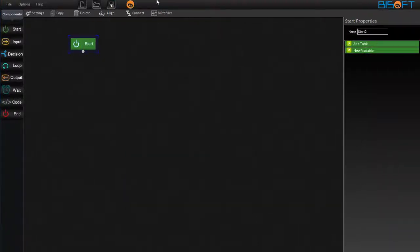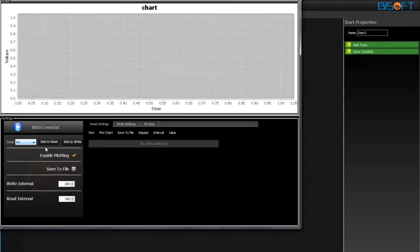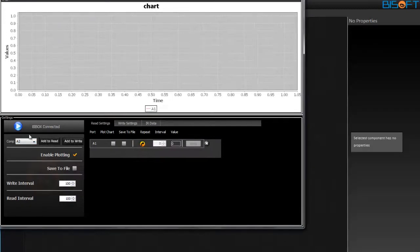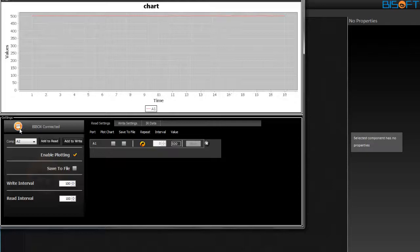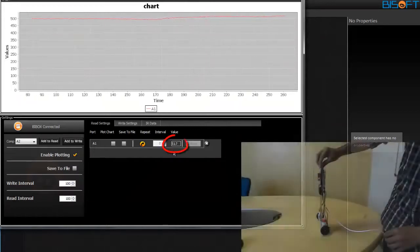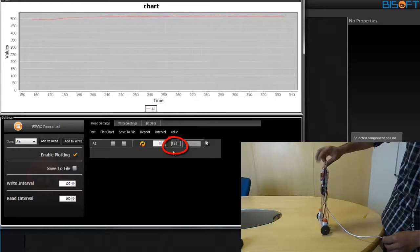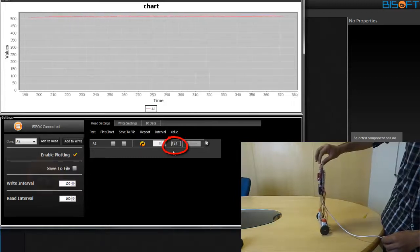Once the program is uploaded, go to B-profiler. And then, add to read A1. Then, click on the blue button. Now, you're getting some values. My IR is around 500. So, now, just make your balancing bar stand straight in the balanced position.